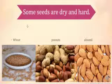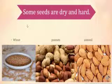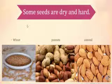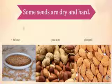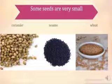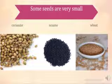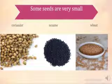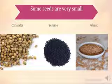Some seeds are dry and hard. Here are some examples of such seeds: wheat, peanuts, and almonds. These are all seeds that are dry and hard. There are many other examples of dry and hard seeds.